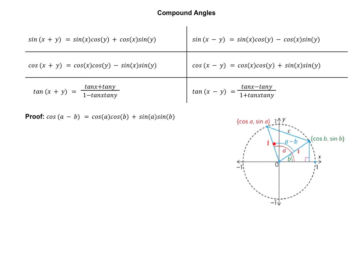The angle inside the triangle is the total angle A subtract the outside angle B, so A minus B. I'm going to use this triangle — the fact that these two sides are equal to one, the fact that this angle is A minus B — and I've just labeled this side length as C.